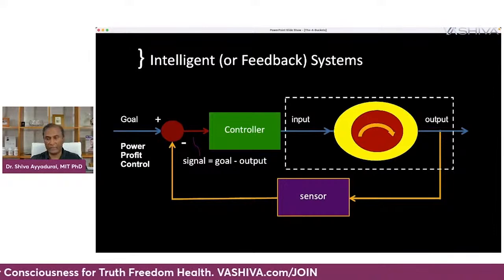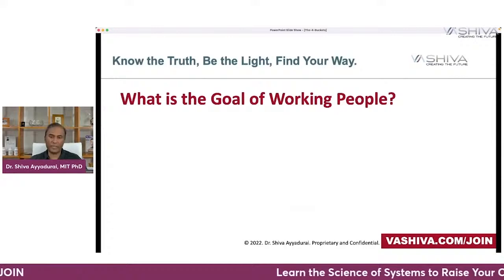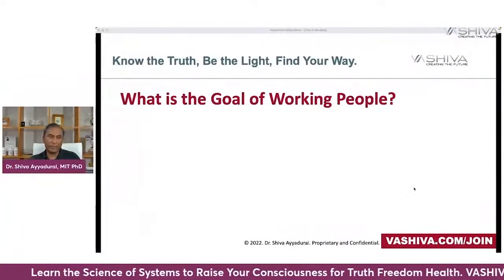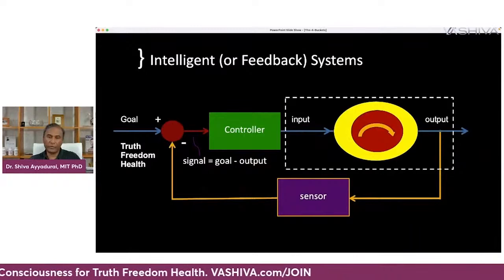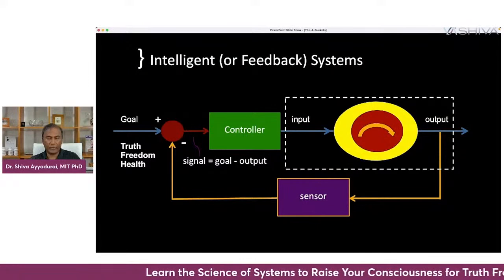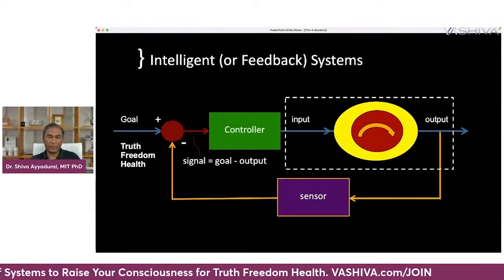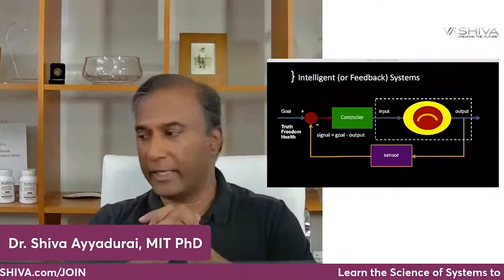It's important to understand what inputs you are exposed to every day if you're going to have a chance of combating it. Alternatively, the other question we must ask — relevant to all of us — is what is the goal of working people? The goal of working people is vastly different: it is truth, freedom, and health. In order to achieve truth, freedom, and health, there are six different kinds of inputs we have to struggle and fight for. There is a scientific theory — what I like to call the science of everything — to really understand this.